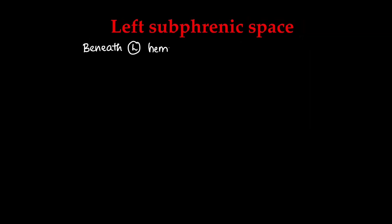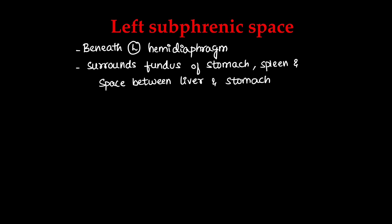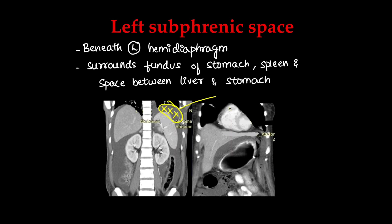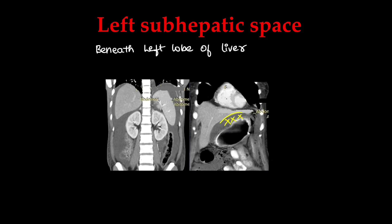Coming to the left half: the left subphrenic space, as the name suggests, is beneath the left hemidiaphragm. It surrounds the fundus of the stomach, the splenic hilum and the space between the liver and stomach. The left subhepatic space is beneath the left lobe of the liver.